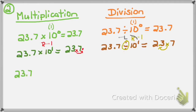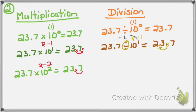My next multiplication problem: 23 and 7 tenths times 10 to the 2nd power. 10 to the 2nd power is greater than 1 — I'll move my decimal two places since my exponent is 2. I write down 23.7, cross out the decimal, move it one place, then add a place value zero so I can move it that second place to the right. So 23 and 7 tenths times 10 to the 2nd equals 2,370.